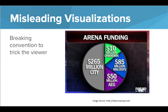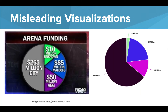Another way that data can be misleading is when convention is broken to try to trick the viewer. Pie charts should always equal up to 100%, and each slice of the pie should accurately display its percentage of the whole thing. Here it looks like the city is contributing half of the funds, but when this data is correctly displayed, the city is actually contributing a lot more.